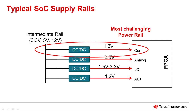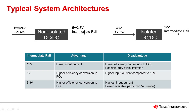We will most likely find a core voltage, which is necessary to power up the processing unit, an analog voltage for the analog circuitry, I/O voltages usually placed between 1.5 and 3.3 volts, and an auxiliary voltage to power up auxiliary circuitry like PLLs, peripherals, and clock control units. In turn, these rails must be derived from an intermediate power source, which is usually identified as a 12V, 5V, or 3.3V voltage rail.